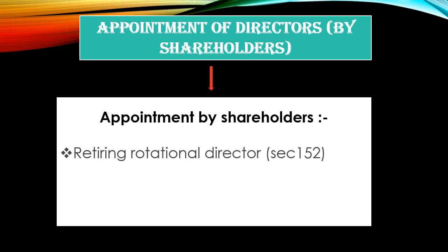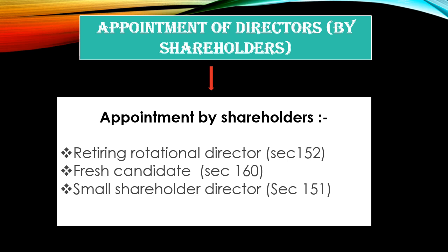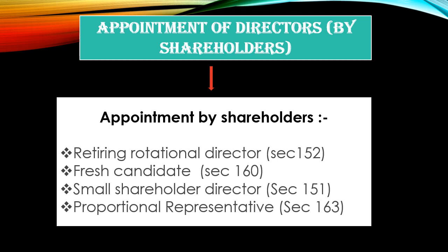Now, who are the directors appointed by shareholders in the general meeting? First is the retiring rotational director. Second is a fresh candidate — those who are other than the retiring rotational director. Third is the small shareholder director, appointed by small shareholders. And the last is proportional representatives.